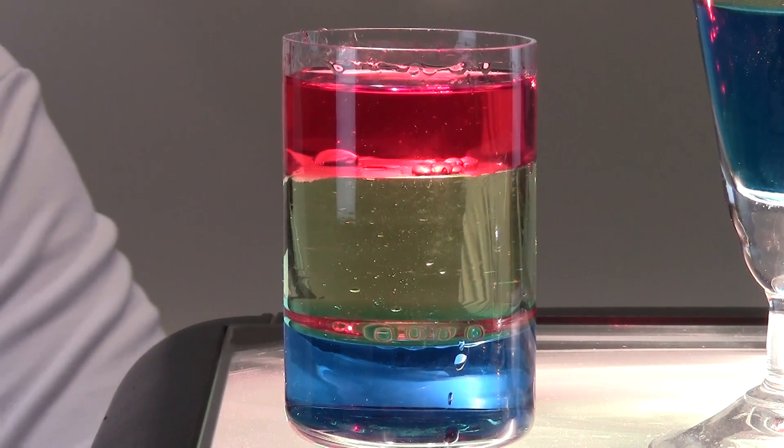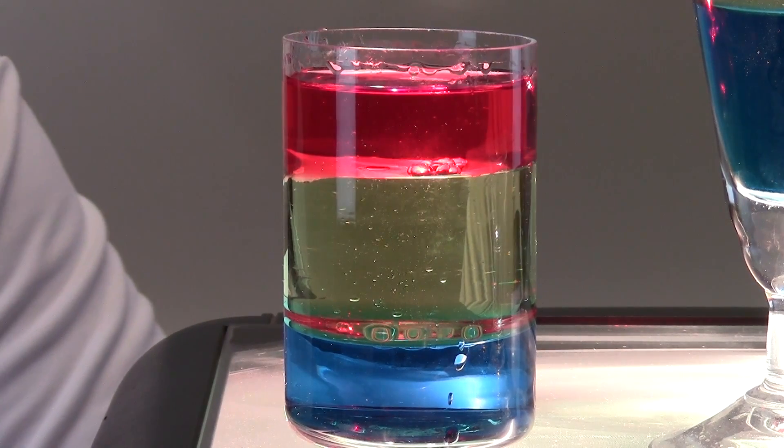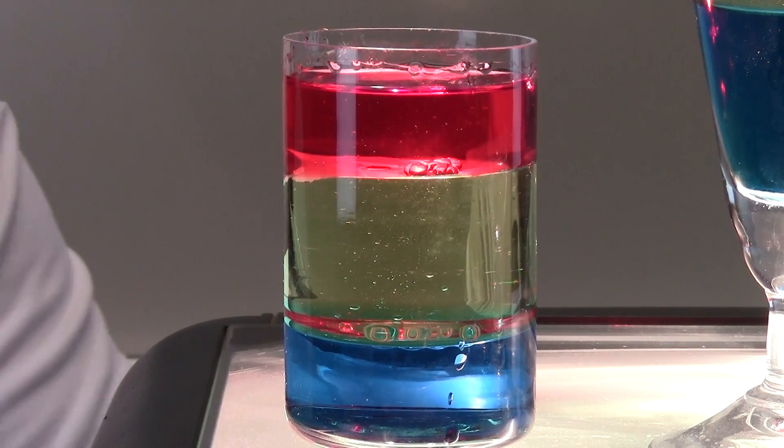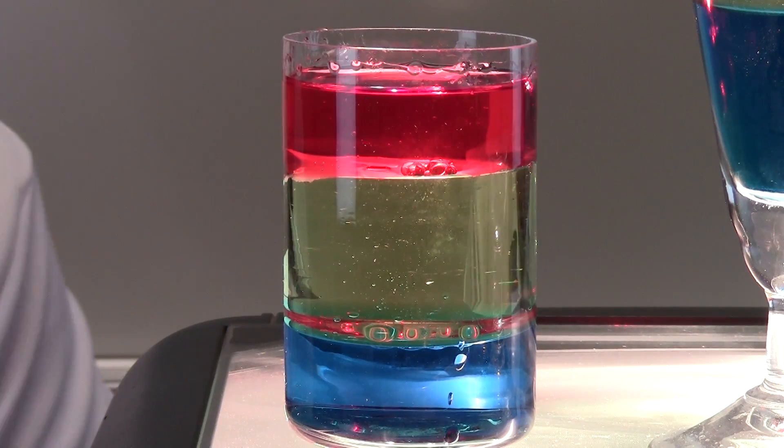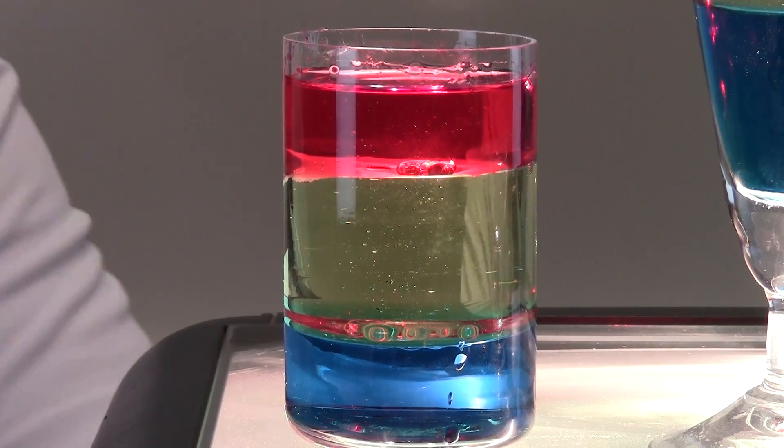So I wonder what would happen if I suck up some of the red and try to do the same thing. The red seems to be on top of the yellow. I am thinking it is not as thick. Let us prove that.